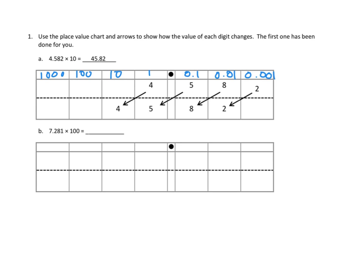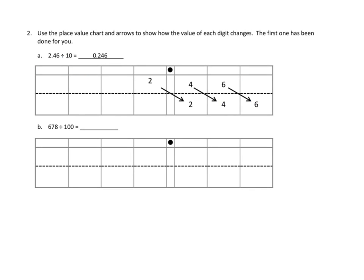Let's take a look at problem number two. Problem number two asks us to use the place value chart and arrows to show how the value of each digit changes. Same as the first one. The first one has been done for you. Let's take a look at 2a and see what they've done. Well, they have 2.46.